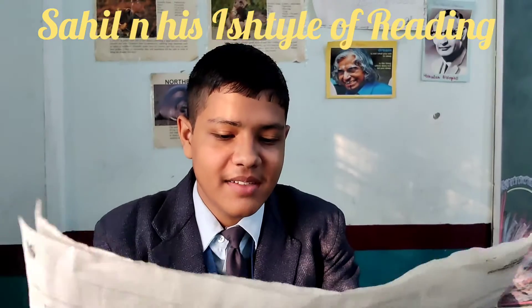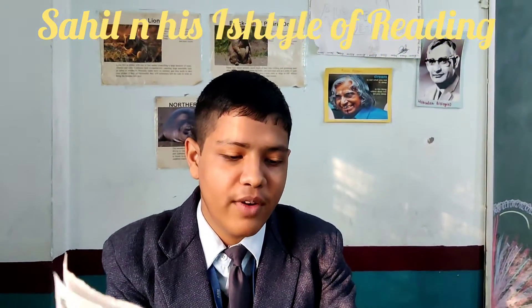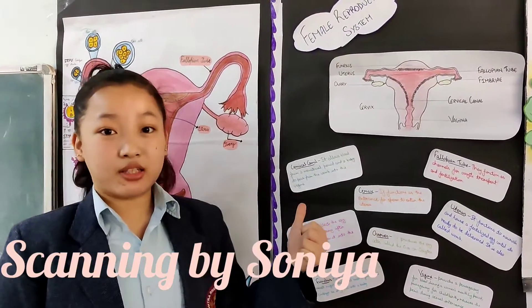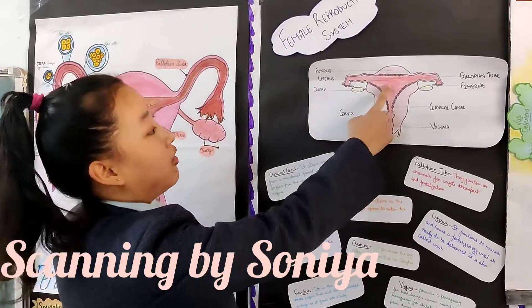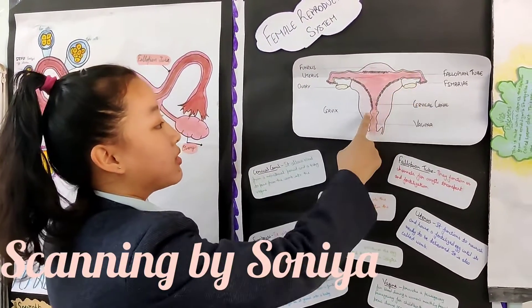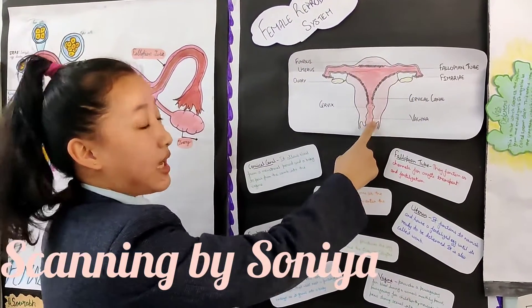The female reproductive system consists of ovaries, fallopian tubes, and uterus. There are two ovaries: the left ovary and right ovary. The ovaries can connect with the uterus through the fallopian tube.